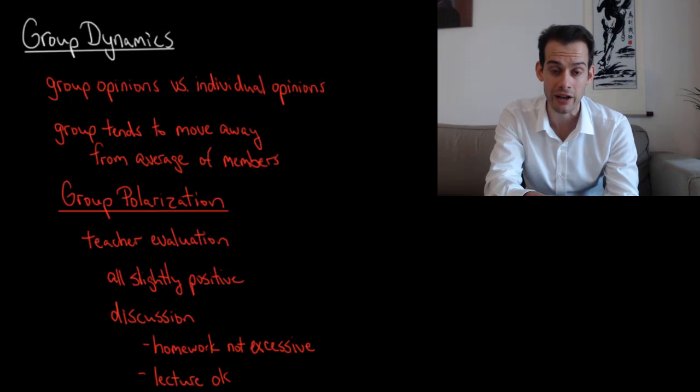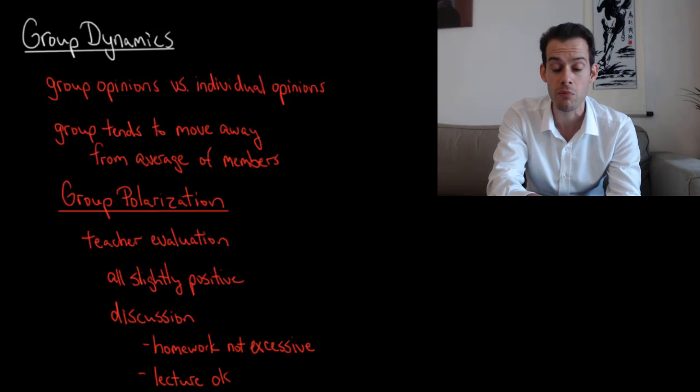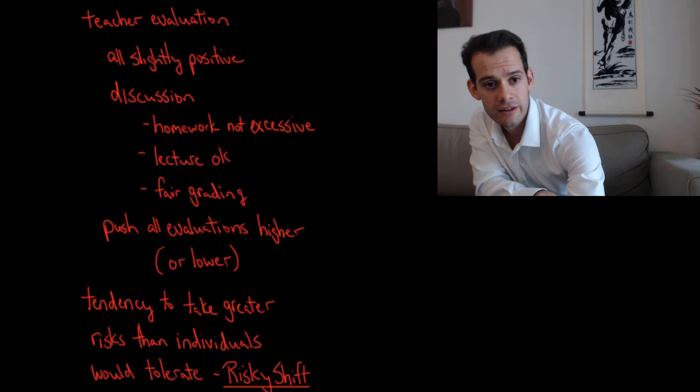And one of the first things we find is that groups have a tendency to become more polarized. They adopt more extreme positions than the individuals in the group originally had. So groups tend to move away from the average of their members.